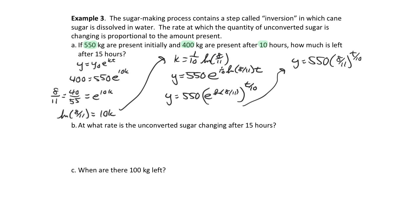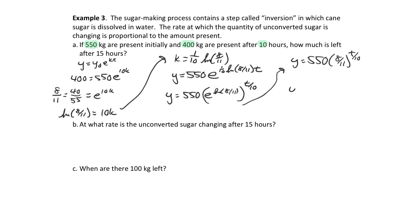We want to know how much is present after 15 hours, so we substitute t equals 15: y equals 550 times (8/11) to the 15/10, which equals 341.12 kilograms.